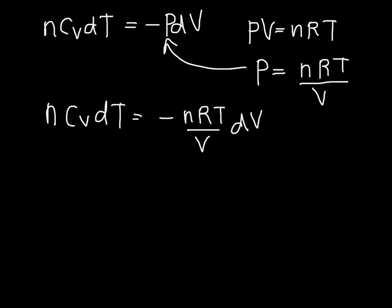If we do a little bit of rearranging, we end up with Cv over T dT equals negative R over V dV. Now we're going to integrate both sides of this equation.